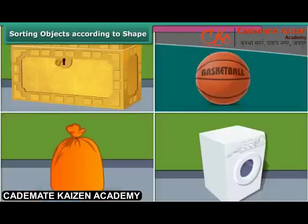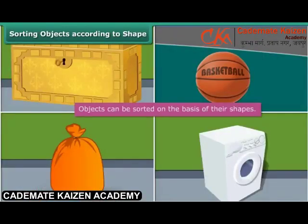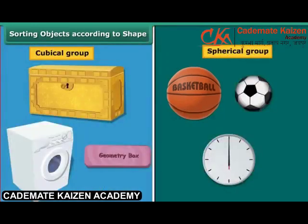A box is a cube or a cuboid, whereas a ball is a sphere. A laundry bag is cylindrical in shape, whereas a washing machine is cuboidal. Thus, we can classify objects on the basis of their shapes. Circular or spherical objects form one group, while cubical, cuboidal, square, and rectangular objects form another group. Such classification allows us to study and analyze the properties of different shapes.